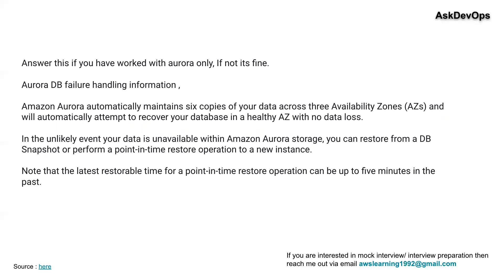If you have worked with Aurora, you can give an answer like this: Aurora is a serverless database. Currently in our project, we have a few Aurora instances running, both in staging and live. The reason we shifted to Aurora is because it is completely maintained by AWS and offers a lot of support in terms of configuration, management, scalability, and disaster recovery. Aurora database failures are completely handled by AWS because at any given point, Aurora automatically maintains six copies of the data across availability zones and will automatically attempt to recover your database in a healthy availability zone with no data loss. Your data is copied six times across different availability zones in your region, so it's almost disaster-proof.